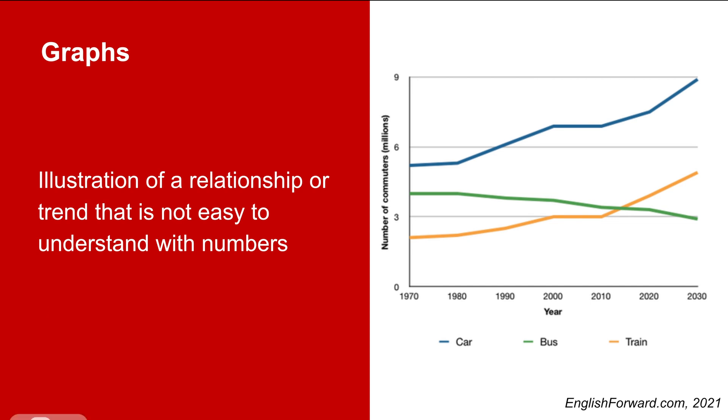The first category of visuals is graphs. Graphs and charts are, in simple words, an illustration of a relationship or trend that is not easy to understand simply with numbers. Graphs distill information so that it can be understood in a single glance.